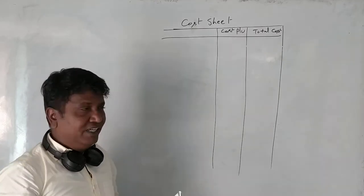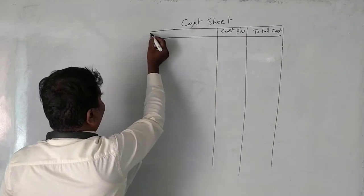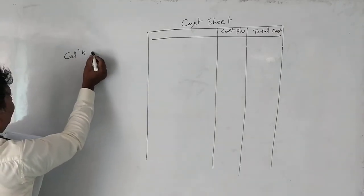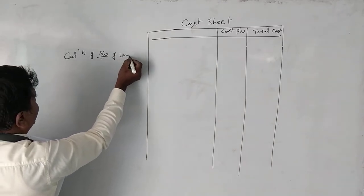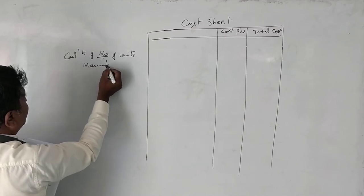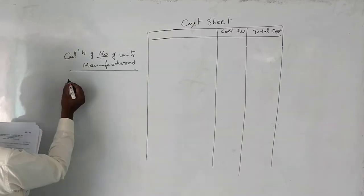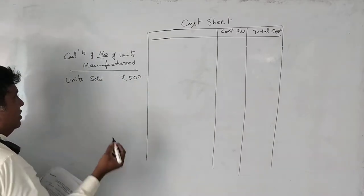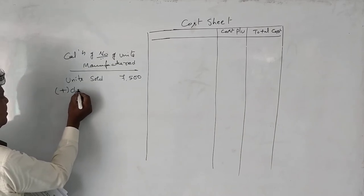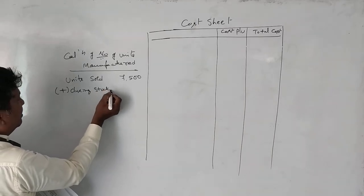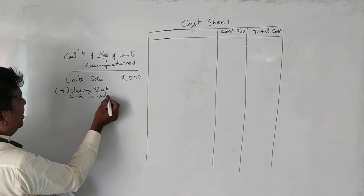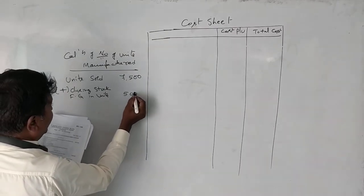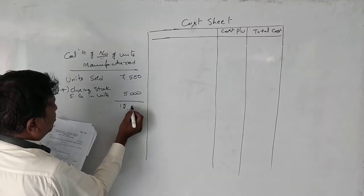He has given the number of units sold. Usually, to calculate number of units manufactured, first you take units sold — 7,500 units — and add closing stock of finished goods in units. Closing stock is 5,000 units. So totally we have 12,500 units.